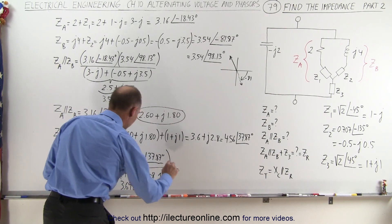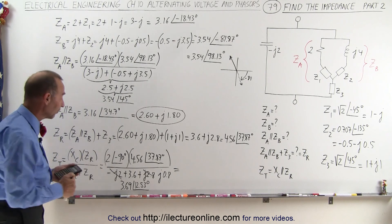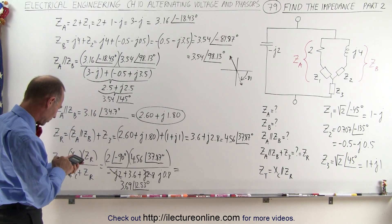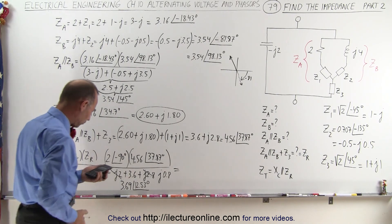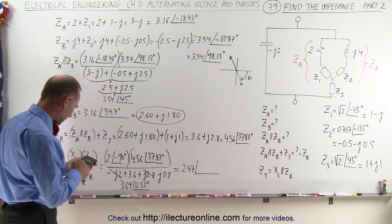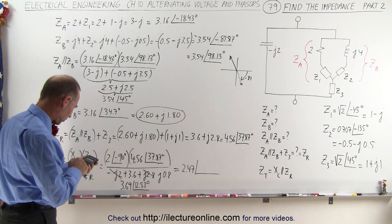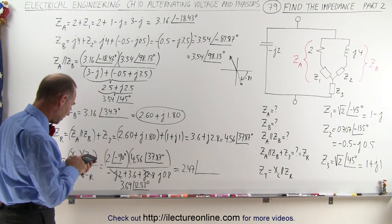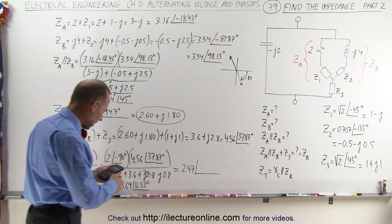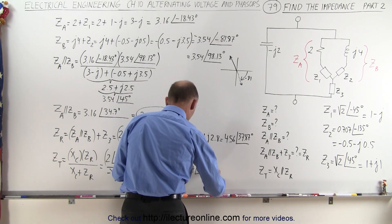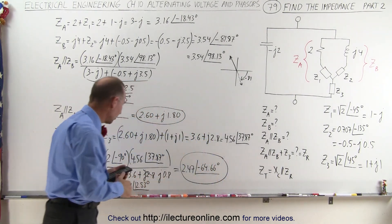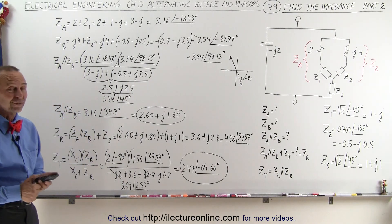Finally, multiplying it all out to get the total impedance: 2 times 4.56 divided by 3.69 gives 2.47, with a phase angle of minus 90 plus 37.87 minus 12.53, which equals minus 64.66 degrees. That would be the final impedance of the entire circuit. And that's how it's done.